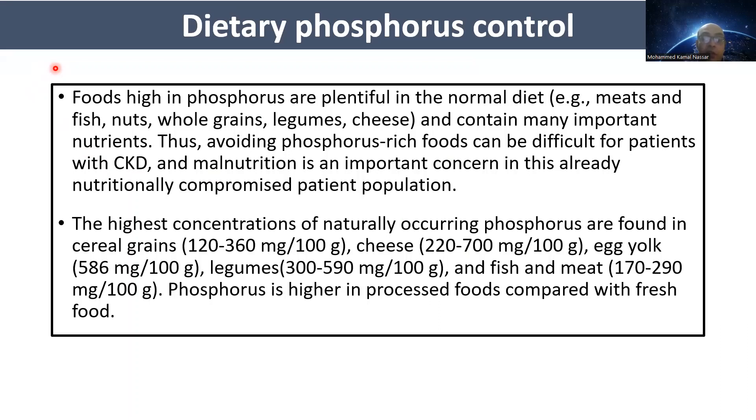The highest concentration of naturally occurring phosphate is found in cereal grains, cheese, legumes, and fish and meat.